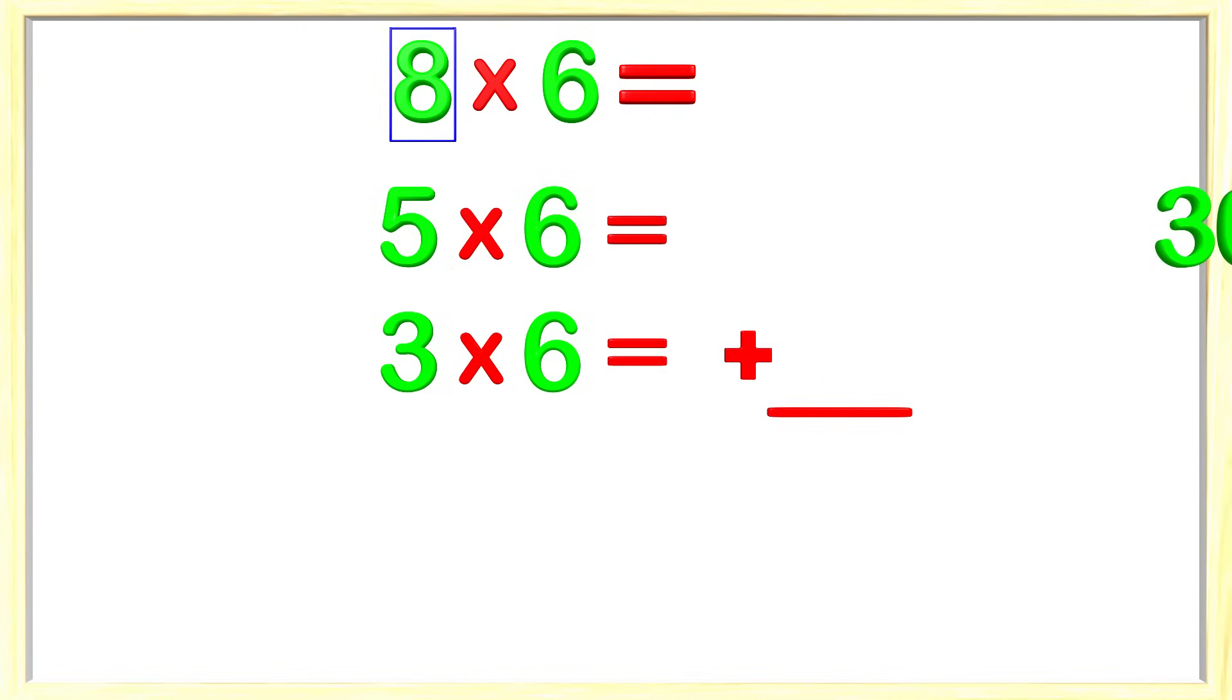I know that 5 times 6 equals 30. What does 3 times 6 equal? 18! Great job! We now need to add the 30 plus 18. 0 plus 8 is 8 and 3 plus 1 is 4. 48 is the answer. 8 times 6 equals 48 and we figured that out using the distributive property.